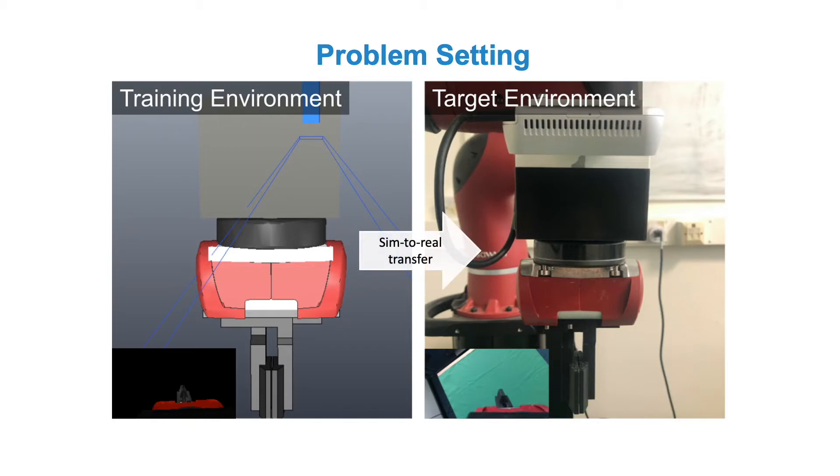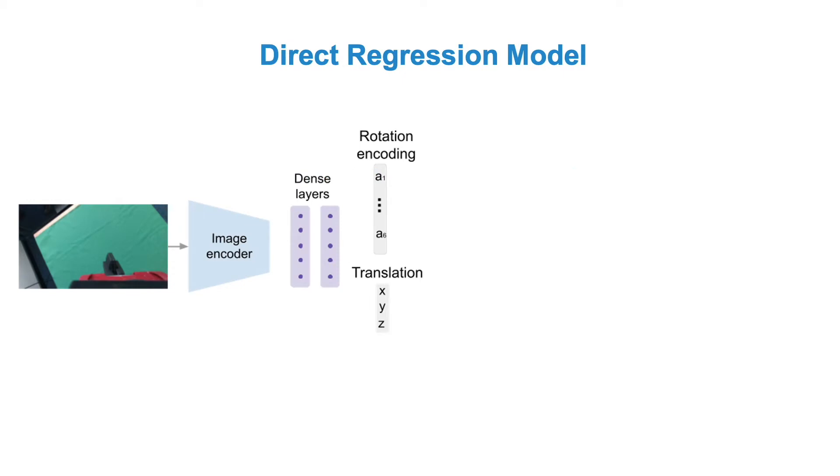We consider three different approaches. Firstly, a direct regression method that predicts the extrinsic parameters directly. An input image is passed through a series of convolutional and dense layers to output an encoded representation of the rotation and translation of the camera with respect to the end effector. These outputs are then decoded and combined to give the final camera to end effector transformation.